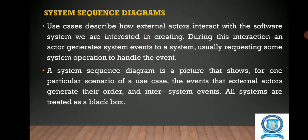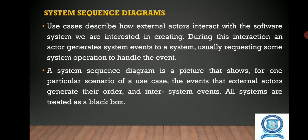Now let us see about system sequence diagrams. Use cases describe how external actors interact with a software system. During this interaction, an actor generates system events to a system, usually requesting some system operations to handle the event. A system sequence diagram is a picture that shows, for one particular scenario of a use case, the events that external actors generate, their order, and inter-system events. All systems are treated as a black box.